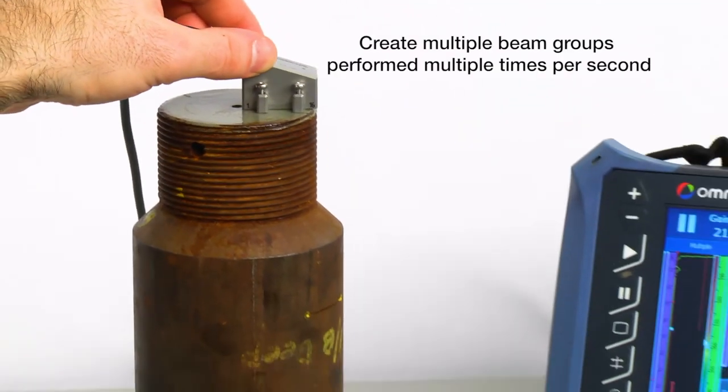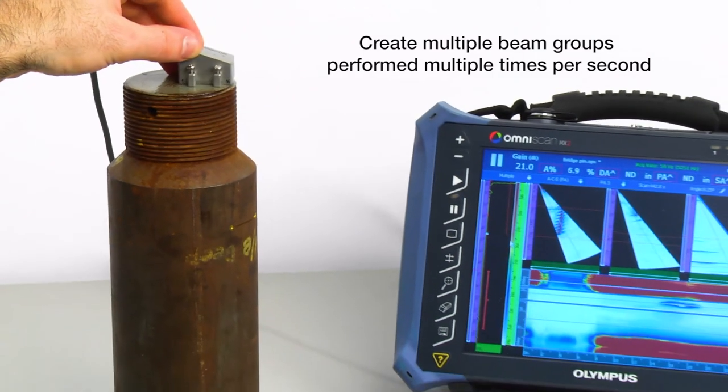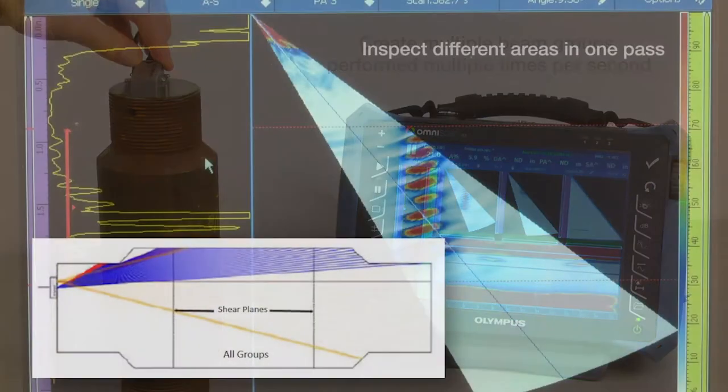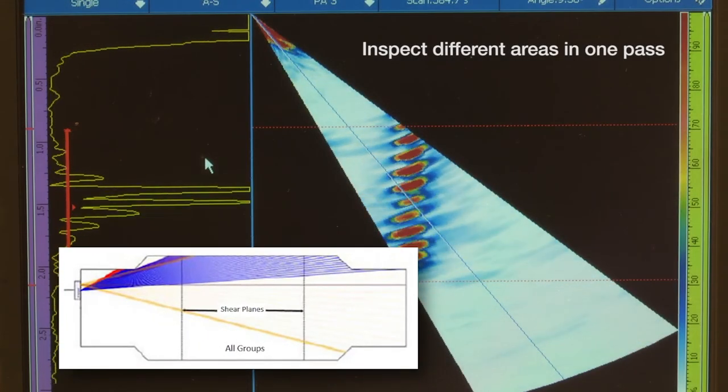However, with an OmniScan MX2 phased array flaw detector, operators can create multiple beam groups performed multiple times per second to inspect different areas of the test piece in one pass.